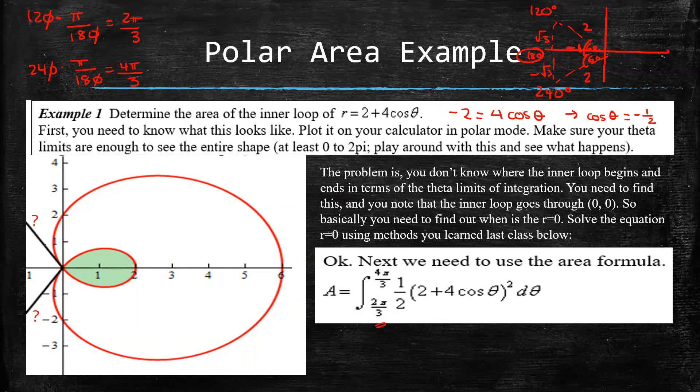So this is our alpha and our beta. So that's basically where this loop starts and ends. So at 2 pi over 3 it starts, 4 pi over 3 it ends.